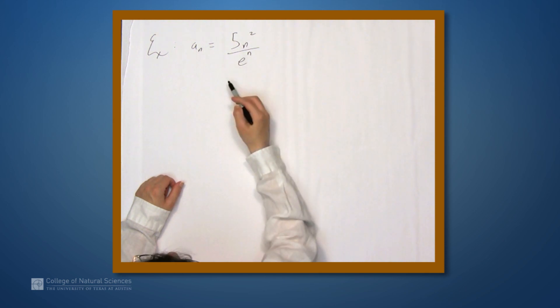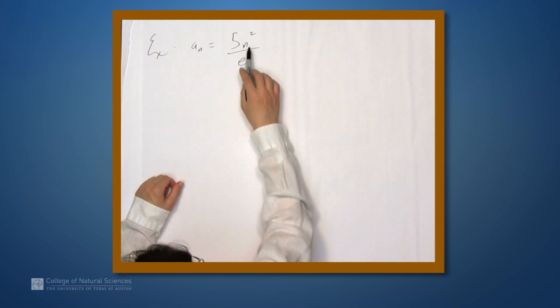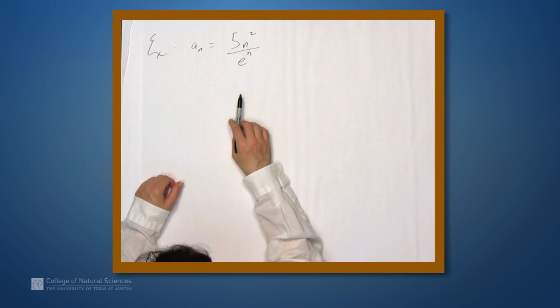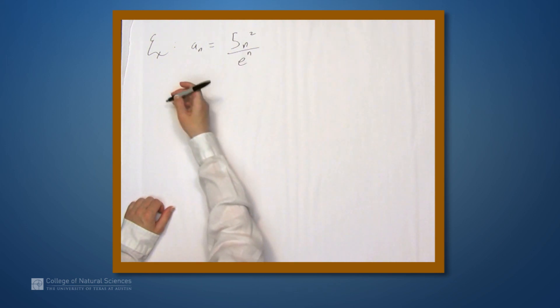Intuitively we know that e to the n is going to grow faster than n squared, and consequently faster than 5 times n squared. But we want to make this explicit, and to do so we're going to define a very similar function, sort of like what we were talking about before.